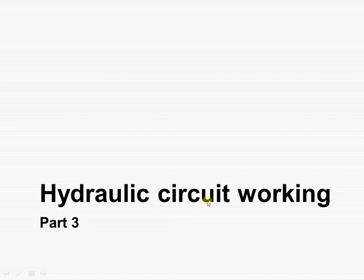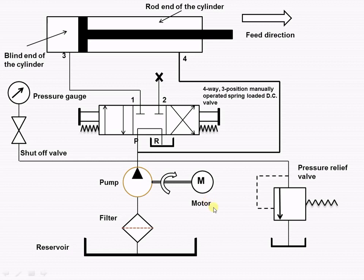Let us start to understand how the hydraulic circuit works. Here we are taking into consideration the regenerative circuit. The regenerative circuit is used to increase the outstroke speed of the piston of a double-acting cylinder.